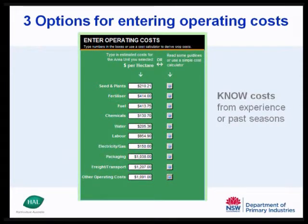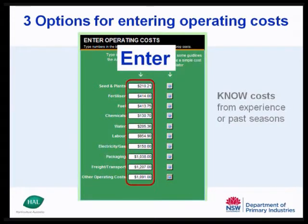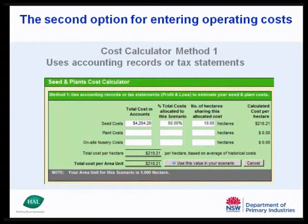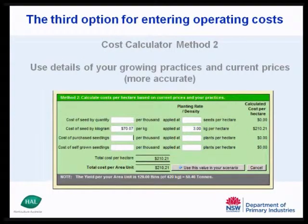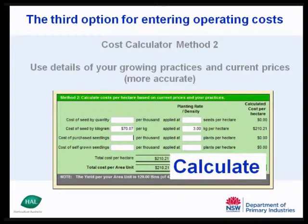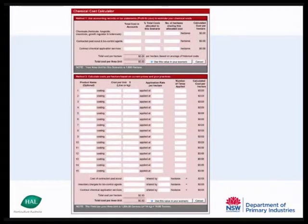There are three options for entering operating costs. In the first option, you enter the costs directly into the white boxes — you do this if you know the costs from past experience or past seasons. The second option uses cost calculator method one, which uses accounting records and tax statement information to estimate the cost. The third option uses cost calculator method two, which uses details of your growing practices and current prices, and a more accurate figure for the costs is calculated. These next slides are examples of the level of detail that can be entered for various costs, including for chemicals or labour.